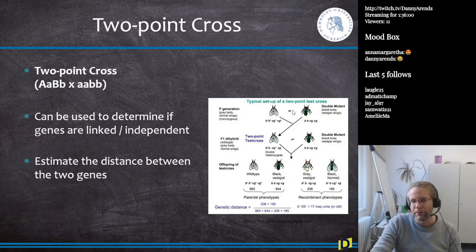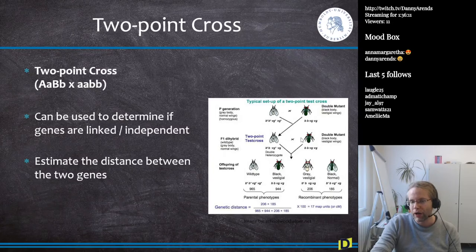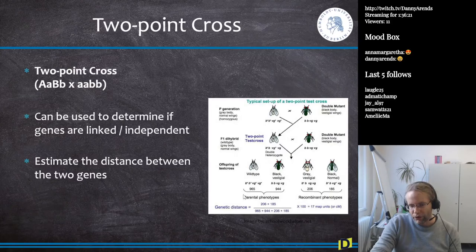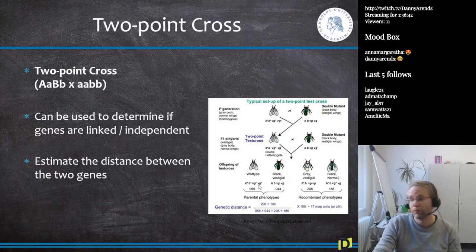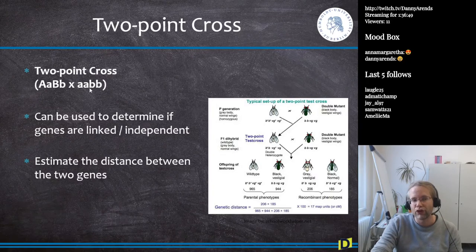We set up the two-point cross: we cross them, get the F1 hybrids with a mixture of the two phenotypes, then cross these hybrids with each other, generating the F2 population. We use the observed amount of parental phenotypes versus recombinant phenotypes. We calculate the number of recombinants divided by the total amount — that is the genetic distance. In this case, 17 MAP units. This follows the exact same strategy as Morgan's original cross, except Morgan exploited the fact that his two phenotypes were located on the X chromosome.